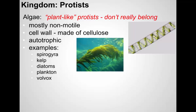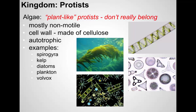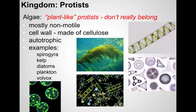Kelp grows in big plant-like structures, and even though we generally think of protists as microscopic unicellular organisms, kelp is also a protist. Diatoms form these interestingly shaped casts — tiny little unicellular protists in the water that form the basis of much of the aquatic food chain. Volvox is a little circular protist. Just a wide variety here.